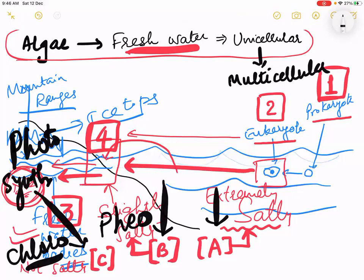Living in water is the basic requirement found with algae. Algae, when found in fresh water, are reaching near to the land, and these organisms wish to go on land. From salty to slightly salty, slightly salty to fresh water, and then from fresh water they want to spread on land.